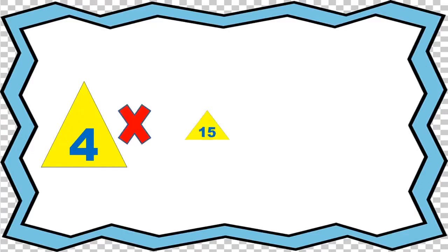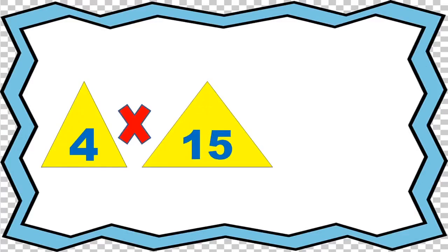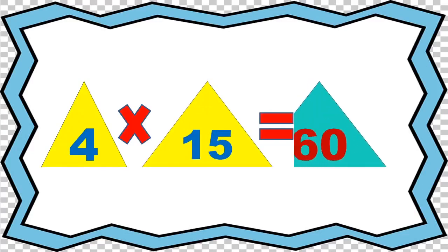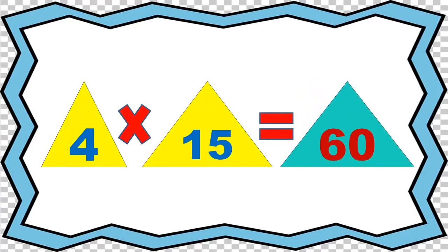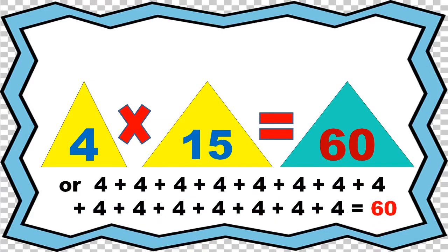4 times 15 equals 60, or 4 plus 4 plus 4 plus 4 plus 4 plus 4 plus 4 plus 4 plus 4 plus 4 plus 4 plus 4 plus 4 plus 4 equals 60.